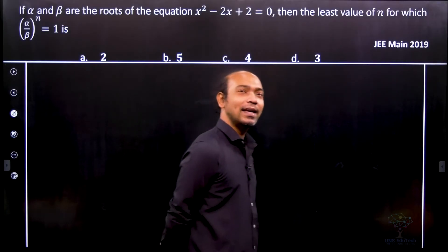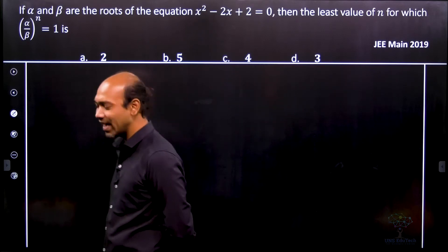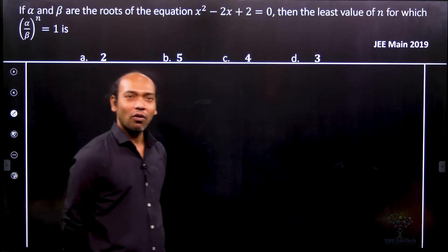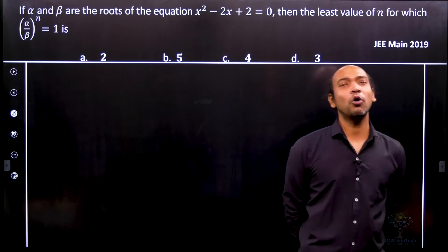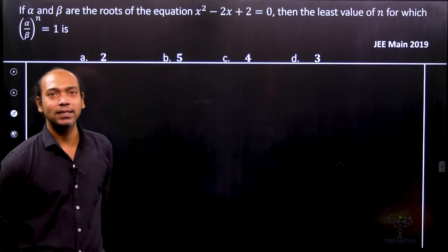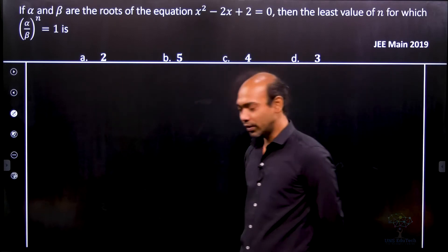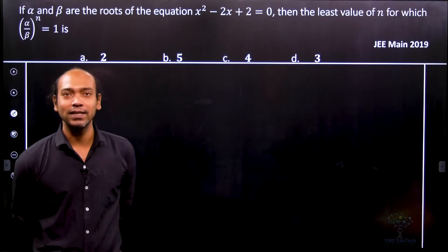In this problem, α and β are the roots of the equation x² - 2x + 2 = 0. We can see that α and β are complex because the discriminant b² - 4ac = 4 - 8 = -4, which is less than 0.